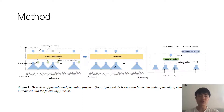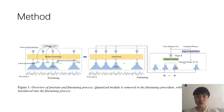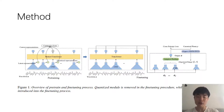Here comes our method. On the left side, we use wav2vec 2.0 for pre-training. Note that only unlabeled audio is used in this process. On the right side, we formulate the problem as a binary classification task. We have the audio, we have the ground truth for each phoneme, and we use cross-entropy for training.